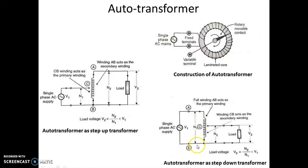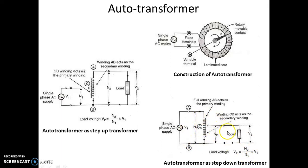This transformer acts as a step-down transformer. The formula for output voltage is V2 = (N2 / N1) × V1. Because N1 is greater than N2, this circuit acts as a step-down transformer.